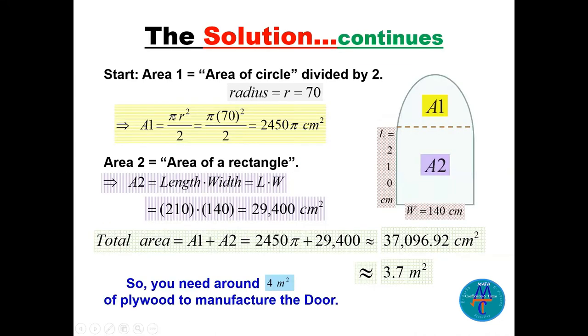We know the area of a circle is πr² then divide that by 2 because A1 is half a circle. So it will be π times 70 squared—70 is the radius—divided by 2, which equals 2450π cm².